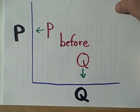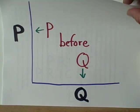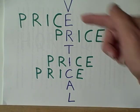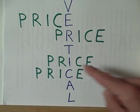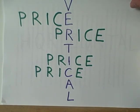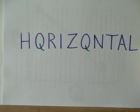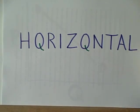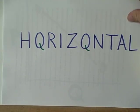Price comes before quantity in this. And here's another way to remember that. The vertical axis is price and the horizontal axis is quantity. You see how we've changed the letter O to a Q to help you remember?